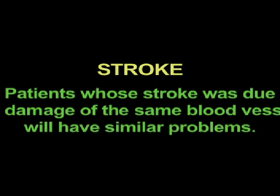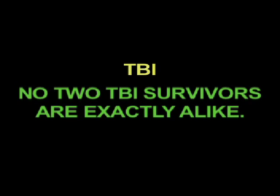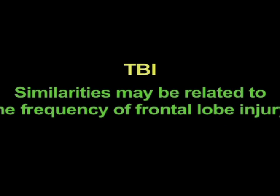In a stroke, patients whose stroke was due to the same blood vessel damage will have similar problems — those two patients will look very much alike. In brain injury, however, diffuse injuries vary greatly from one individual to the next, so no two traumatic brain injury survivors will be exactly alike. Some similarities may be related to the frequency of frontal lobe injuries, which happen quite a bit in car accidents, but the types of difficulties people suffer may be very different even when they have sustained a similar injury.